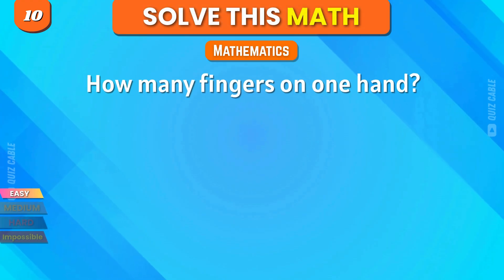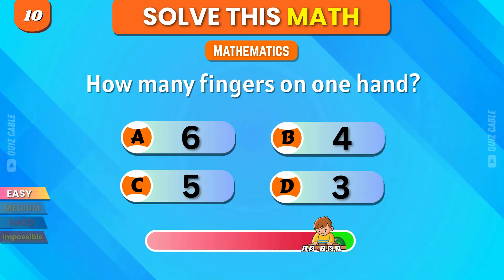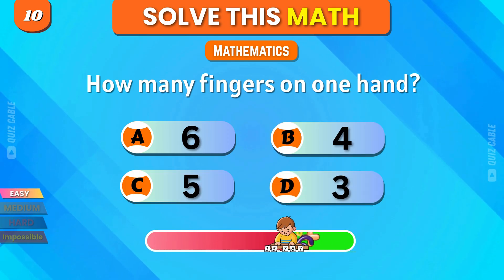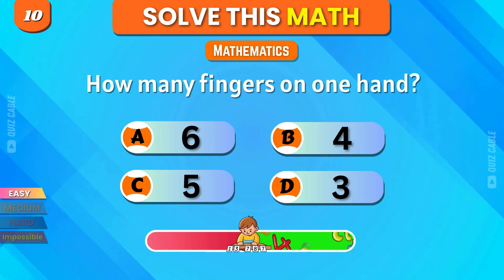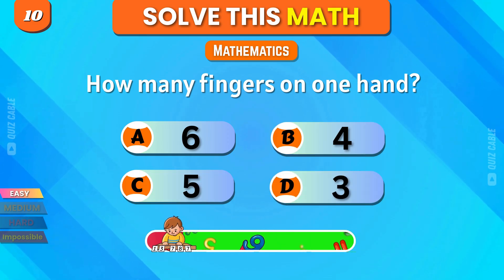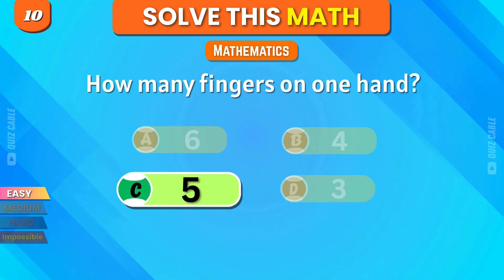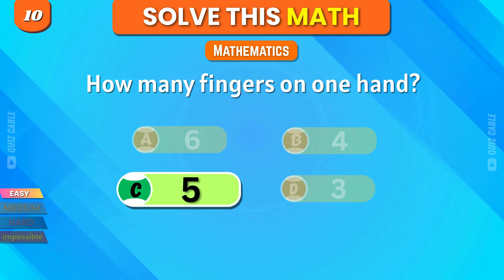How many fingers on one hand? 6, 4, 5, 3. Yes, 5. Easy one.